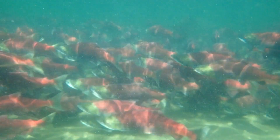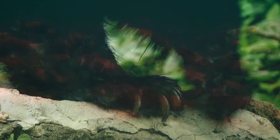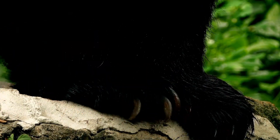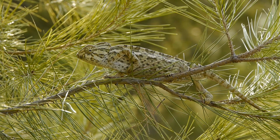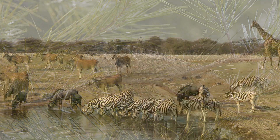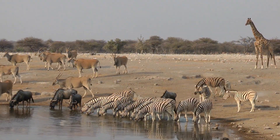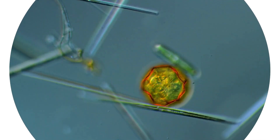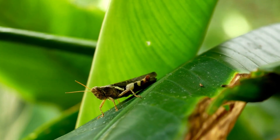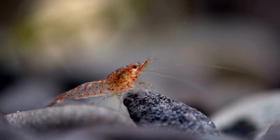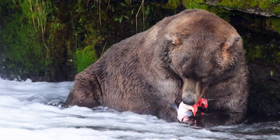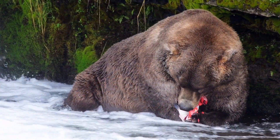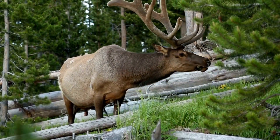Organisms have developed unique adaptations to survive. From sharp claws to camouflage, these adaptations help them find food and evade predators. So remember, every living creature has a role in the intricate dance of the food web. From producers to consumers, from herbivores to decomposers, they're all part of a delicate equilibrium.